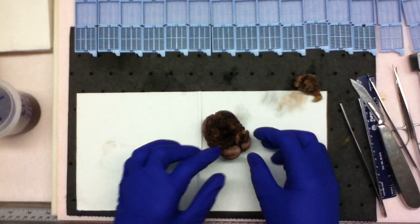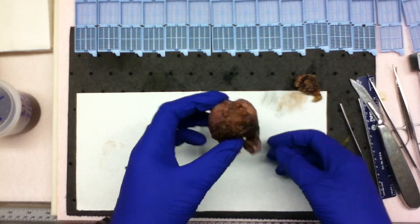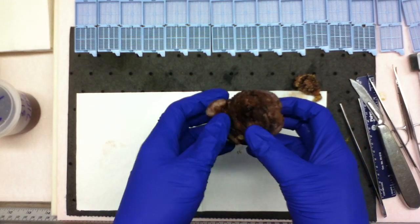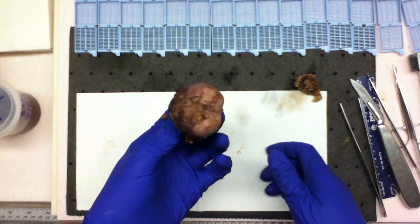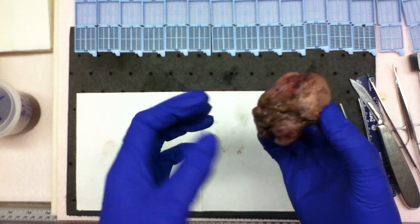Okay, I'm going to gross in a radical prostatectomy specimen. Oftentimes the hardest part of a prostatectomy specimen is the orientation. Once you get the orientation straight, everything else is just basically inking and sectioning the whole thing.